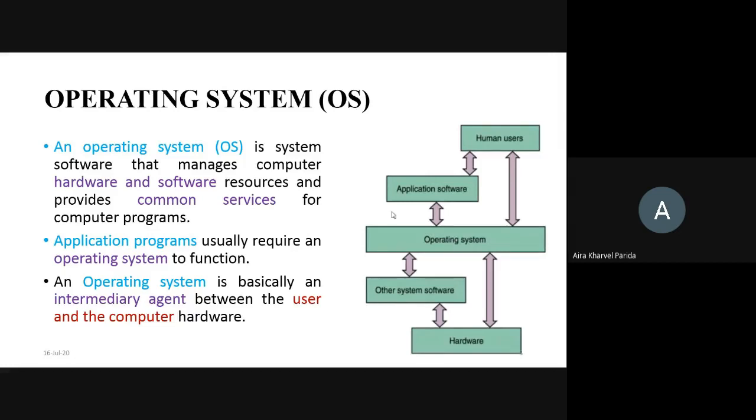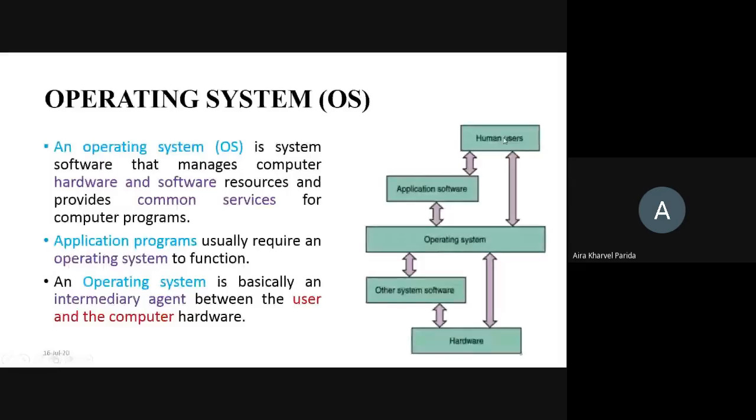Coming to our topic: application software and operating system. You open the operating system before you open the application software. After the operating system opens, you can have other system software associated with it, which are then associated with the hardware. For example, if somebody's computer has a graphics card, the operating system should read that graphics card and let the user know it has been installed. The other software acts like a bridge between the graphics card and the operating system, allowing the user to use gaming software or whatever it may be.